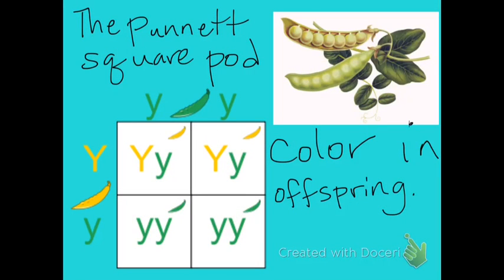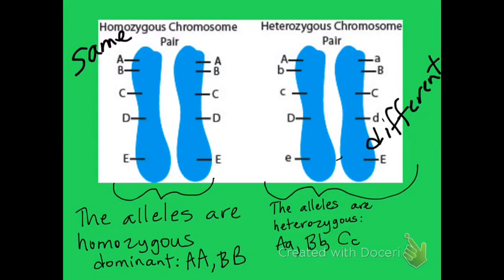The Punnett square is used to determine the genotype of the offspring in a cross involving one contrasting trait. The traits here being contrasted are yellow pea pods compared with green. The alleles on the left are homozygous — both alleles are uppercase and the same, so they're called homozygous dominant. The prefix homo means same. The pair on the right is heterozygous — the alleles come in two different kinds, uppercase and lowercase, represented as uppercase A and lowercase A. Hetero means different, so the pairing is indicated with an uppercase letter next to a lowercase letter.